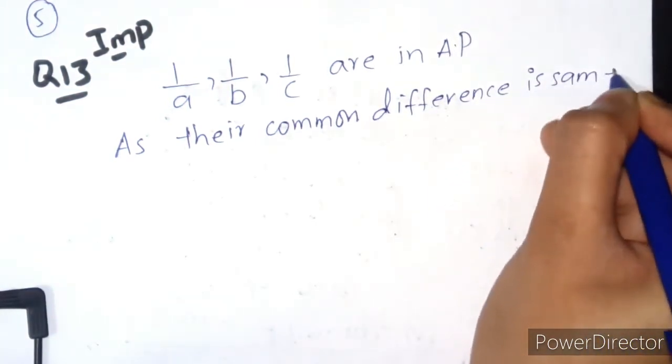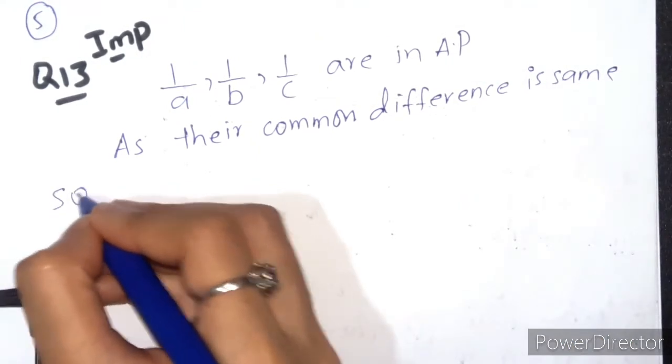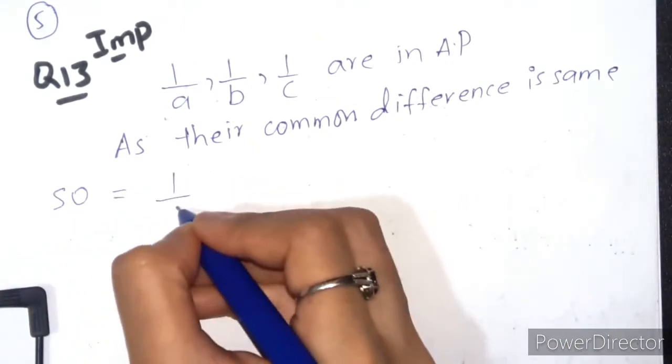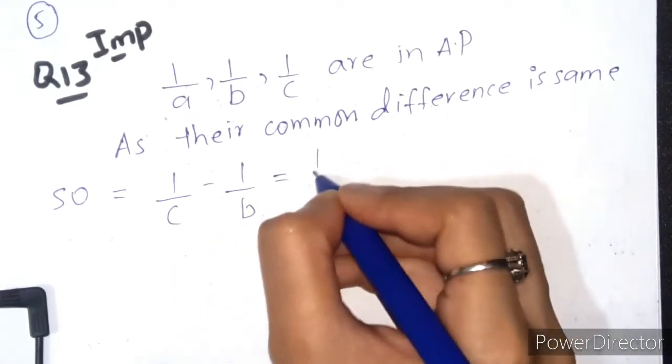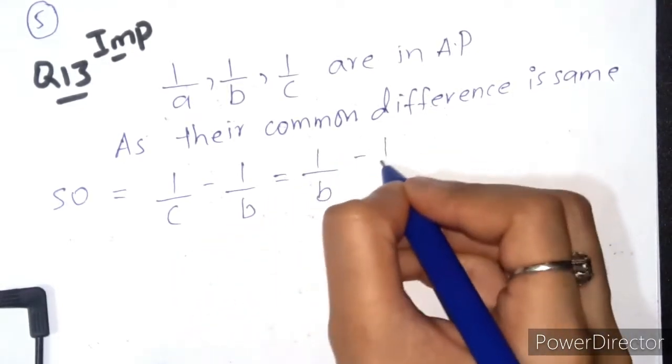So here what happens if we keep: 1/c - 1/b = 1/b - 1/a